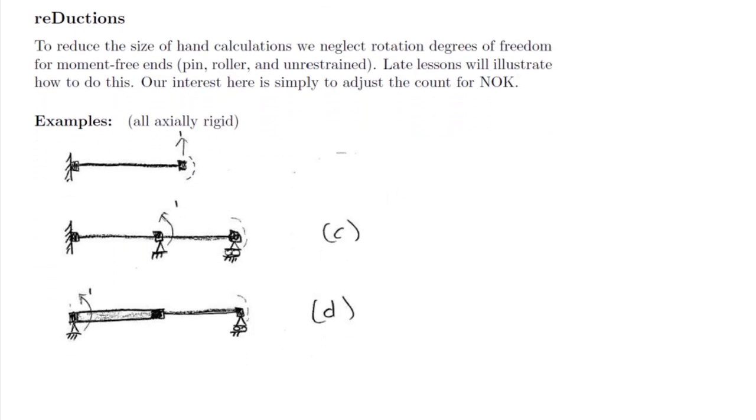We now move to the last topic, and that's reduction of degrees of freedom. We'll see later on how to use this technique. Right now we'll just learn how to count an OK, assuming that we will use it. To reduce the size of hand calculations, we can neglect rotation degrees of freedom for moment-free ends. Now that doesn't mean that we hold that node from rotating. On the contrary, it means that we allow it to rotate and we account for that movement in a different way that we'll see in a later lesson.